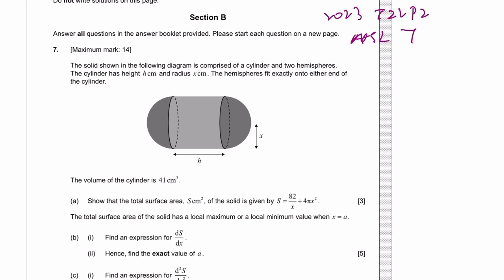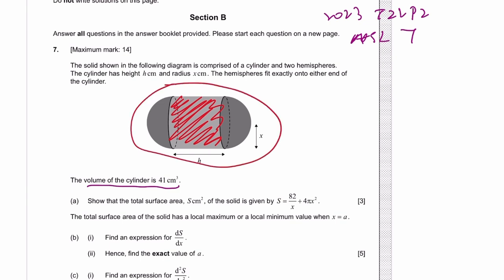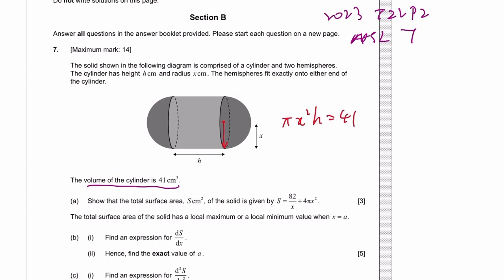We have the volume of the cylinder. That's the tricky part - it's the volume of just the cylinder part, not the whole thing. The volume of a cylinder is pi times the radius squared, radius is x, times the height, and it equals 41.